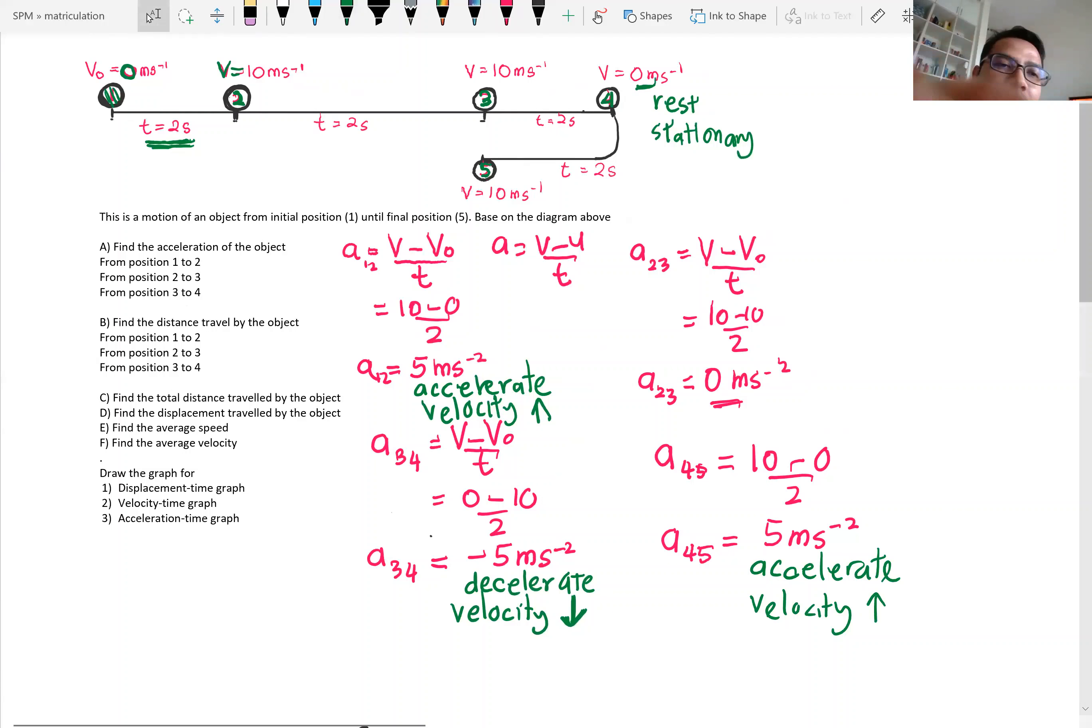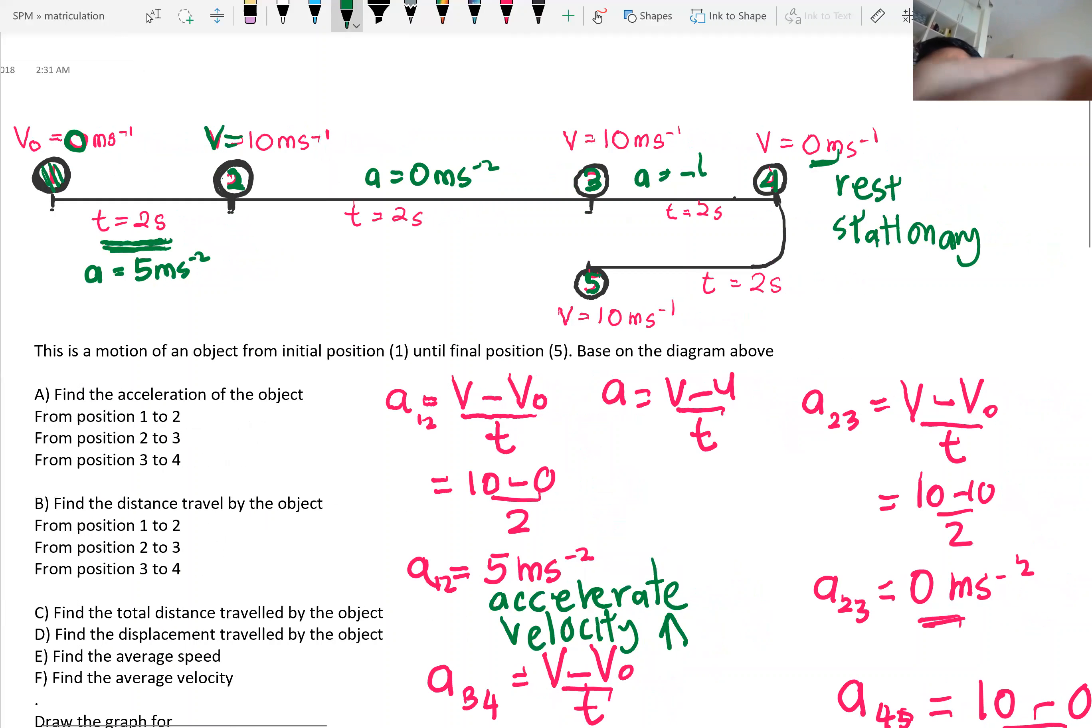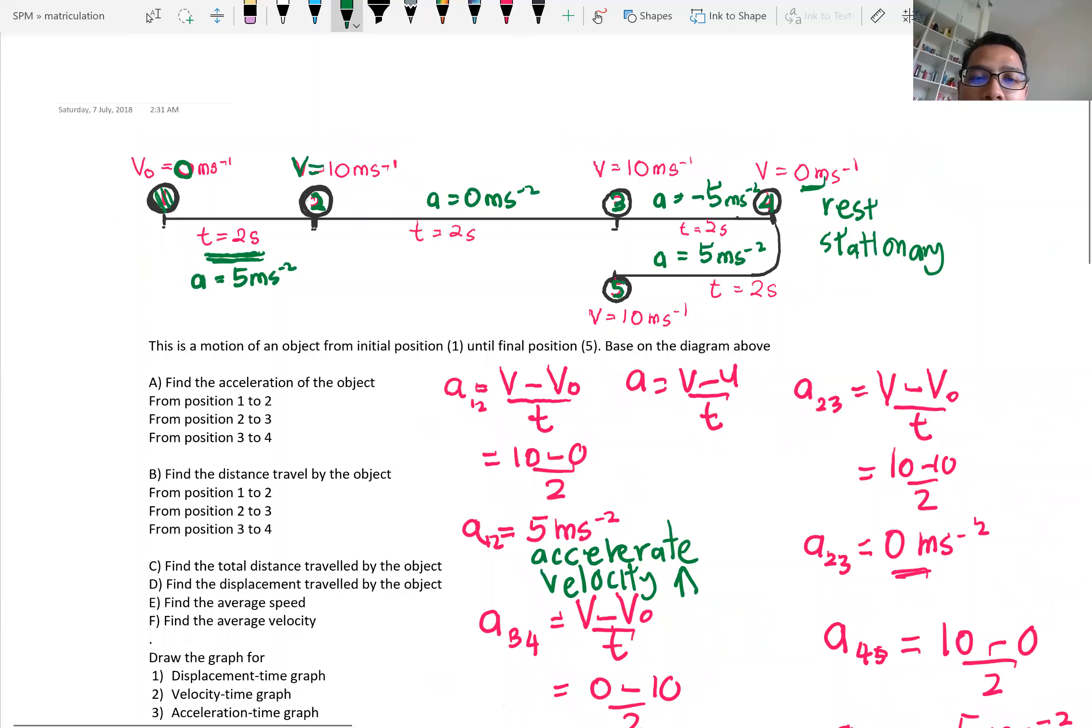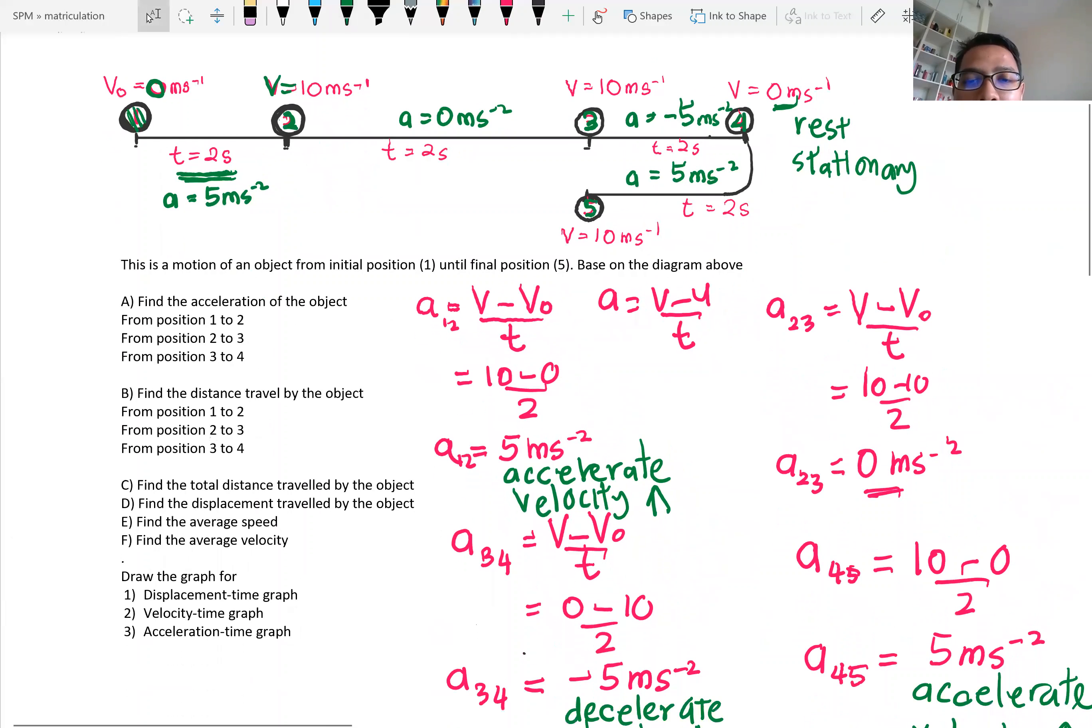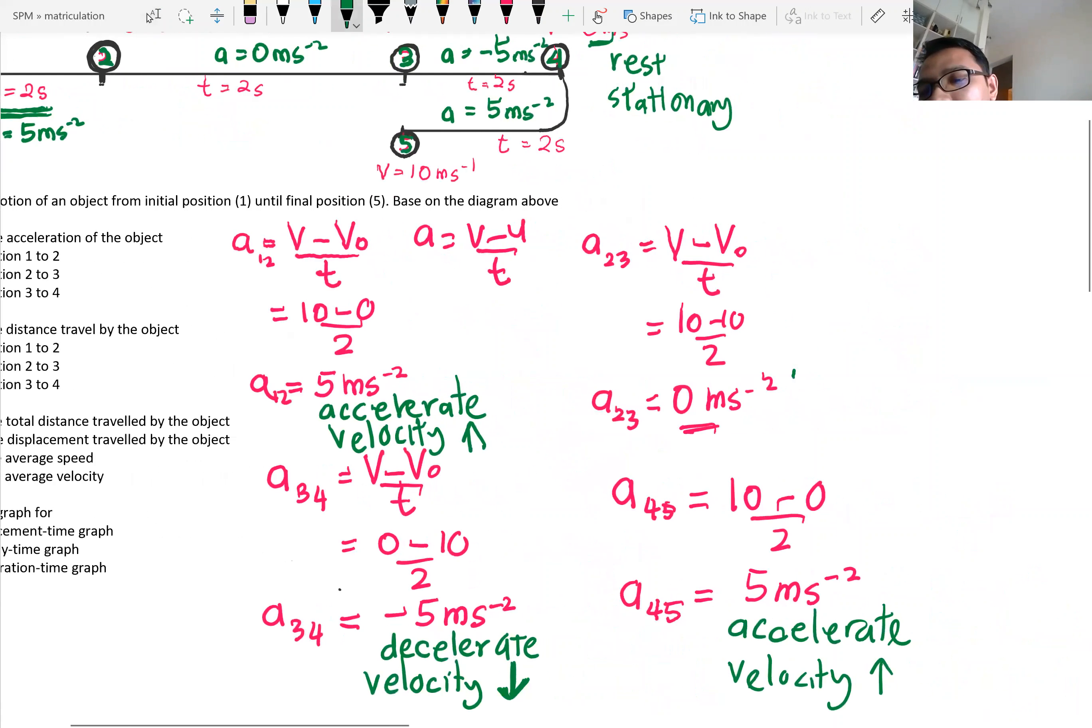So here, the acceleration here is 5, the acceleration from 2 to 3 is 0, from 3 to 4, negative 5 because decelerate, slowing down. And here, even though it moves back, we still got 5 ms⁻². So that is for acceleration. Acceleration positive showing you it's accelerate, negative means it's decelerate. Zero acceleration is either stationary.